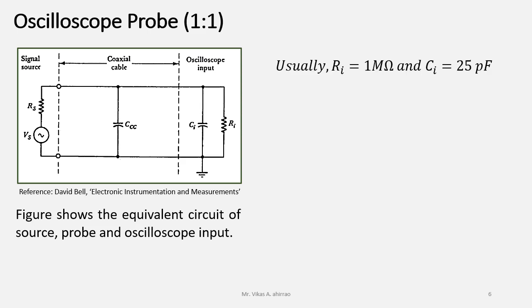Usually most of the oscilloscopes are having the resistance of 1 megaohm in parallel with the capacitance 25 picofarad.